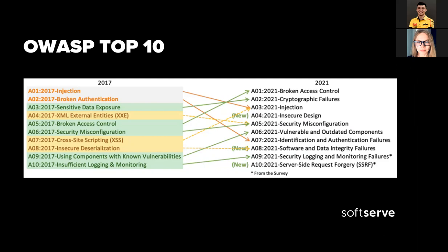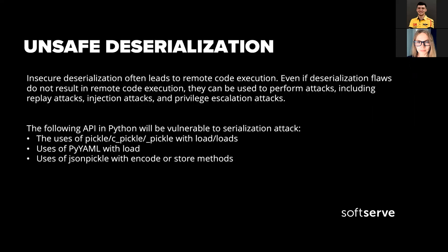OWASP is important for the information it provides. It serves as a key checklist and internal web application development standard for many of the world's largest companies. Now we will check common mistakes that developers make based on this list. First of all, unsafe deserialization. Insecure deserialization often leads to remote code execution. Even if deserialization flaws do not result in remote code execution, they can be used to perform attacks including replay attacks, injection attacks, and privilege escalation attacks.